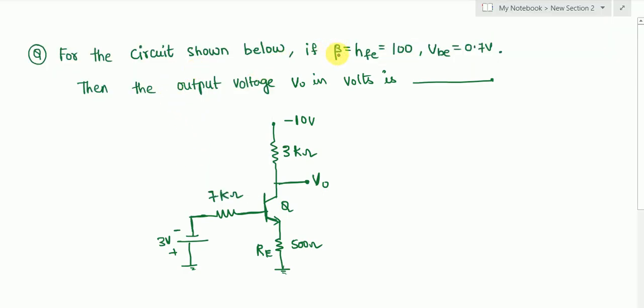For the circuit shown below, if β = HFE = 100 and VBE = 0.7V, then the output voltage V0 in volts is? The potential across this is given as 0.7V. What is the value of this output voltage is the required thing to be found.